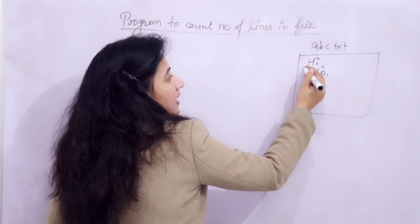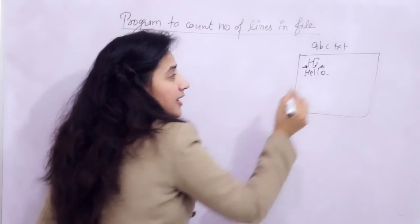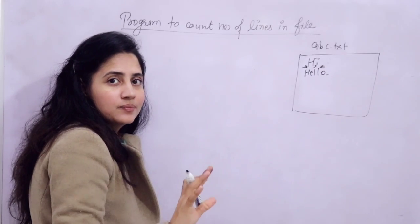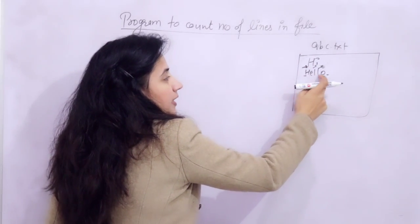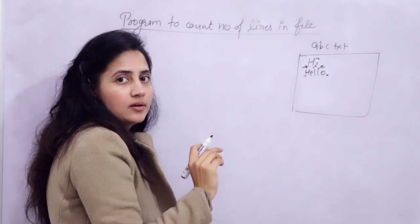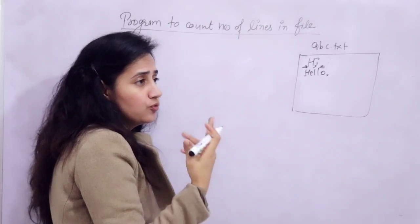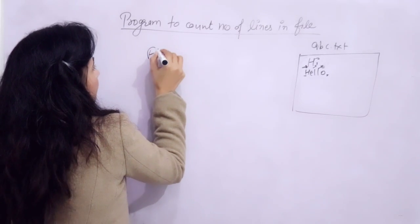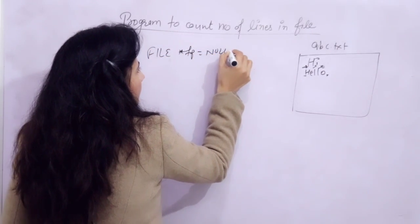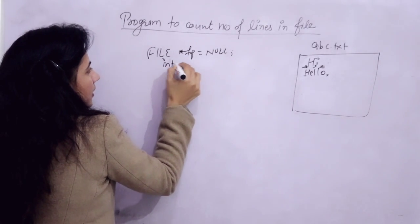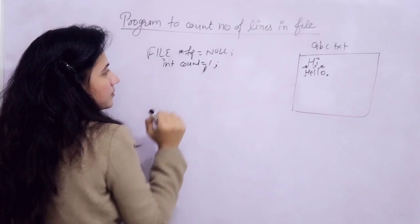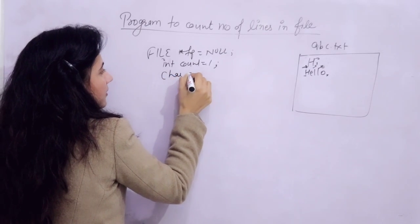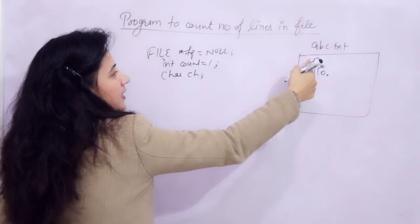The logic is: just count the newline operator and that's it. We will read the file character by character. First character is 'h', then 'i', next character is newline — as soon as we get a newline, increase the count by 1. We read all characters until end of file. We'll put this in a while loop, for loop, or do-while loop. First, we create a file pointer, and I am writing int count equal to 1 — note: not 0. I'll tell you why.